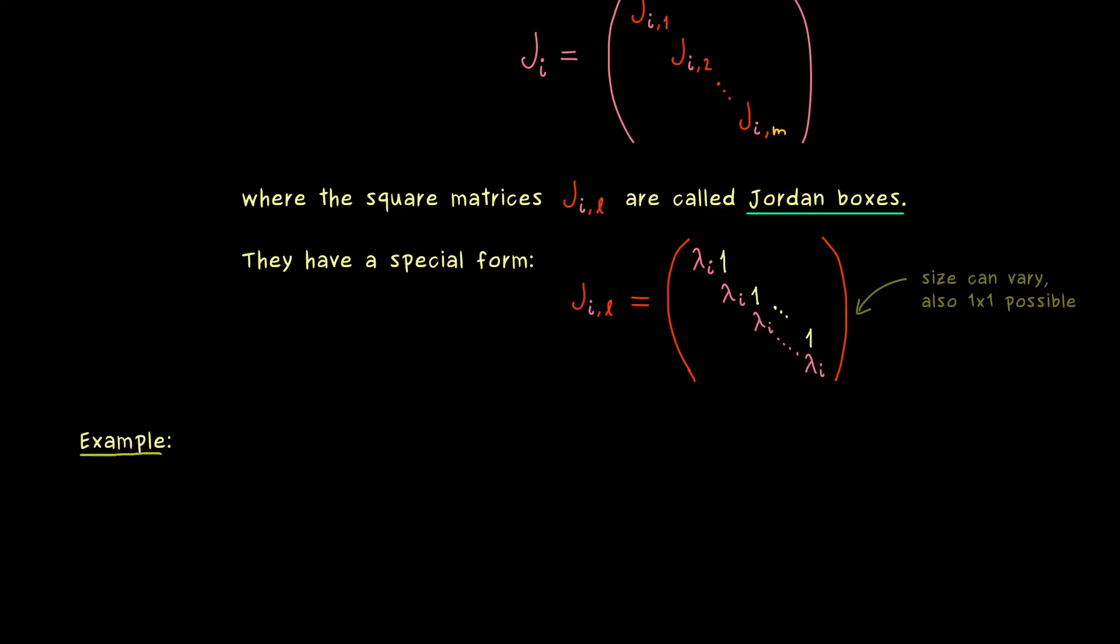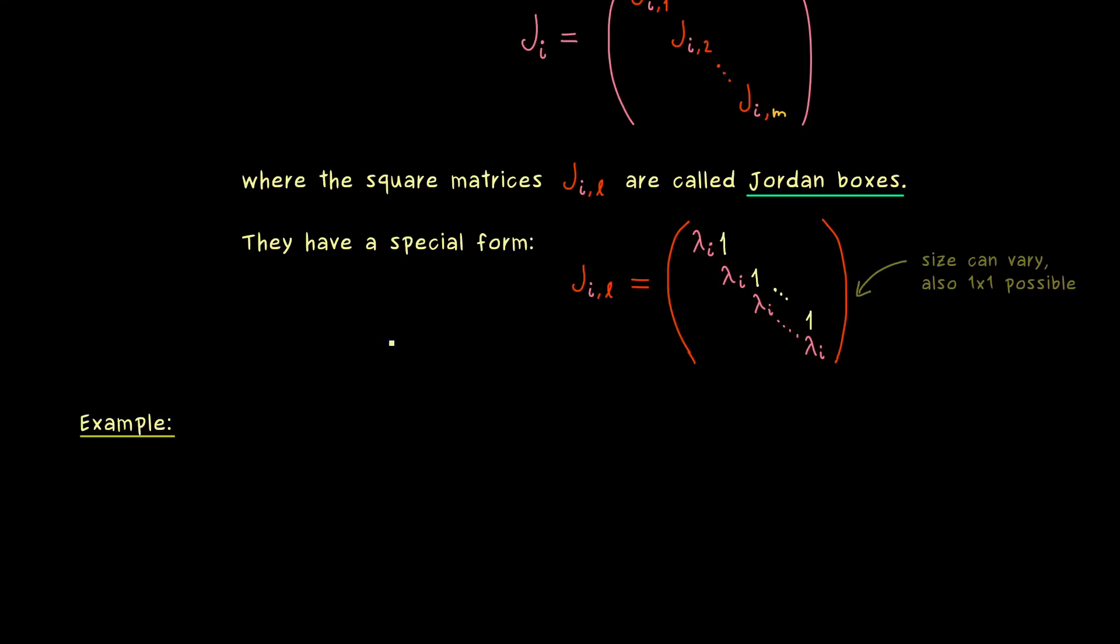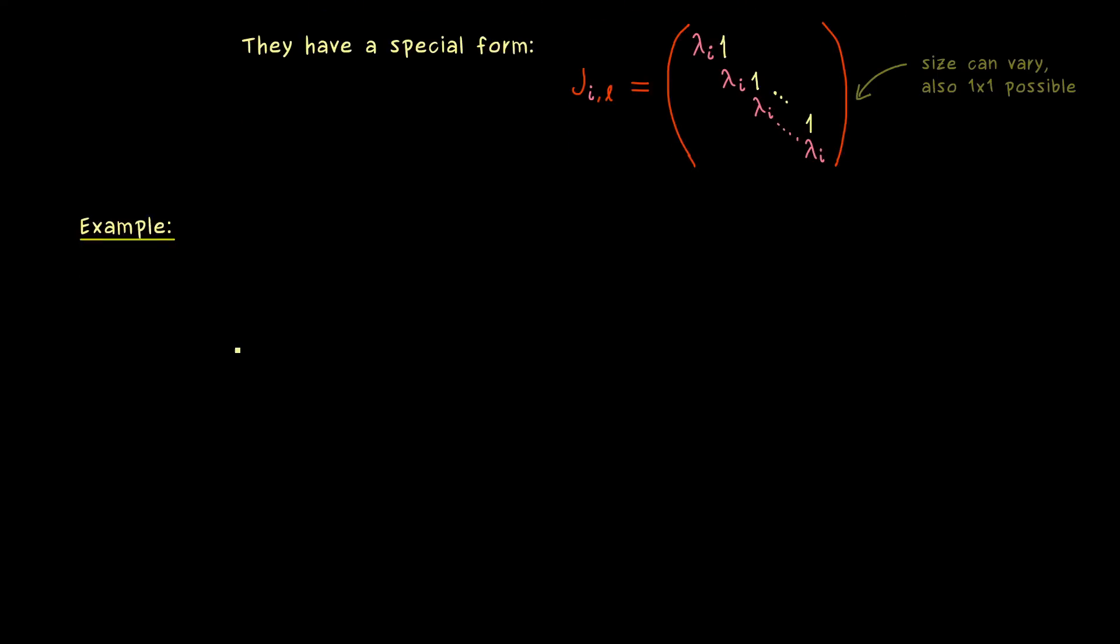However this is only the case because of the general description with indices. In an example everything is much simpler. And therefore let's immediately look at a suitable example. And in order to make it interesting, let's choose it big enough. Let's take a 9x9 example.